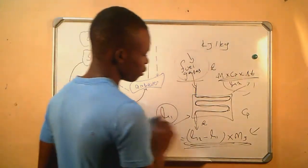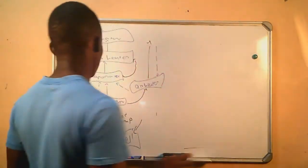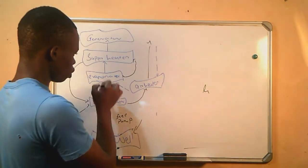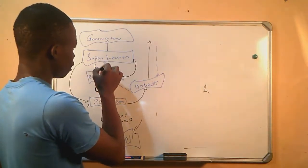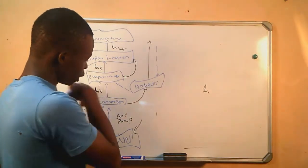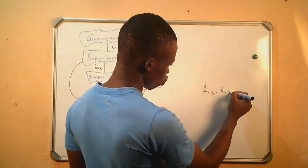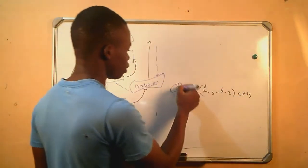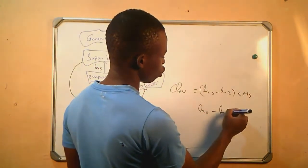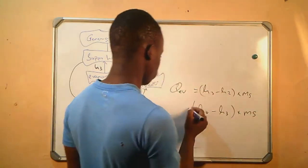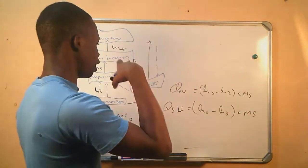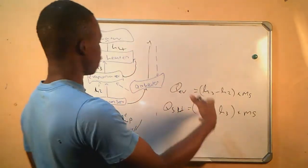The same thing will happen in the evaporator. We know the enthalpy values are H1, H2, H3, and H4. In the economizer it's H2 minus H1. In the evaporator it will be H3 minus H2, times the mass of the steam. This is at the evaporator. And in the superheater it will be H4 minus H3. This is the heat gained or lost at the evaporator, and H4 minus H3 is the heat gained or lost at the superheater.